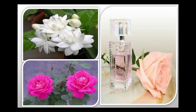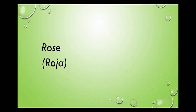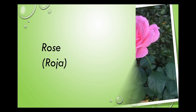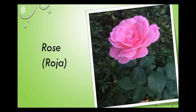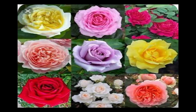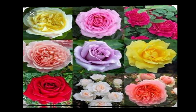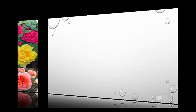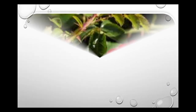Now we are going to learn about some flowers which are around us. Rose (Roja): There are different colours of roses, like pink, white, yellow, orange, and so on. Roses have a pleasant smell. Most roses have thorns on their stems.